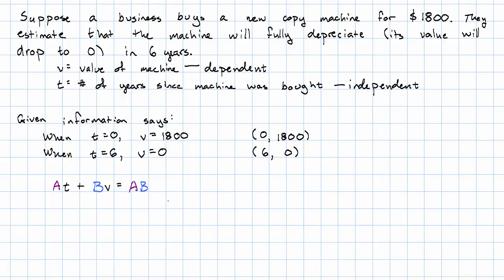What are my a and b? The value of v, the value of v when t is 0, that's my a. And the value of t when v is 0, that's my b.